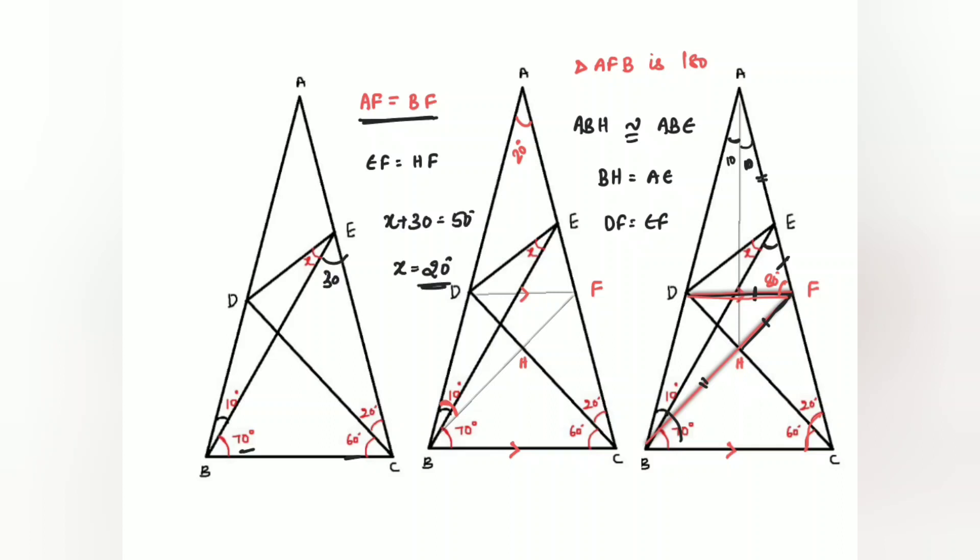The very tricky part of this, once again I'm repeating, is BHA. ABH or BHA is same as EAB. So these two are congruent, so that congruency you have to keep in mind.